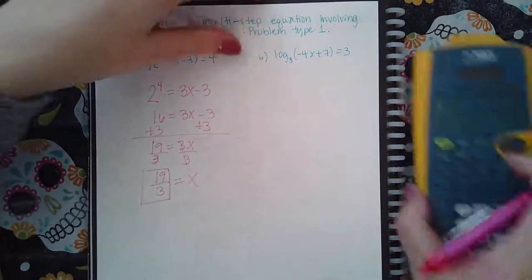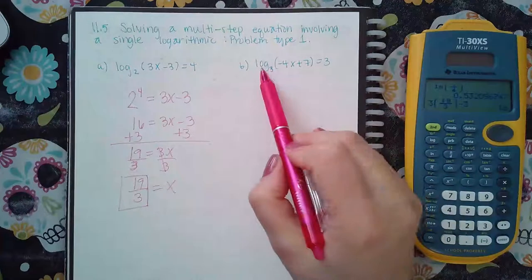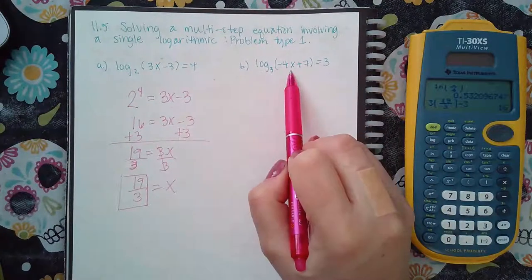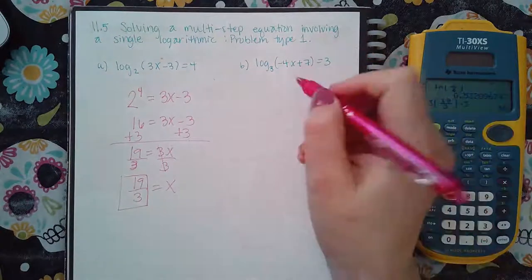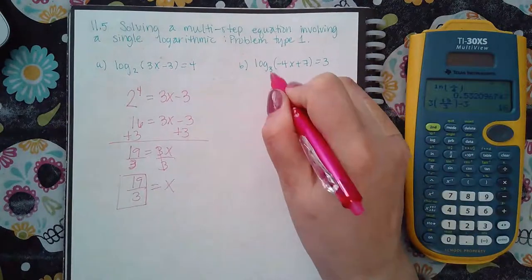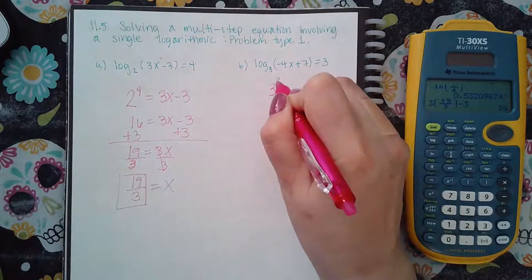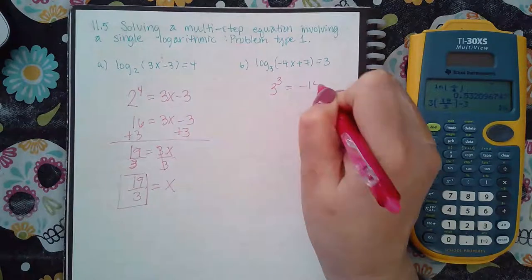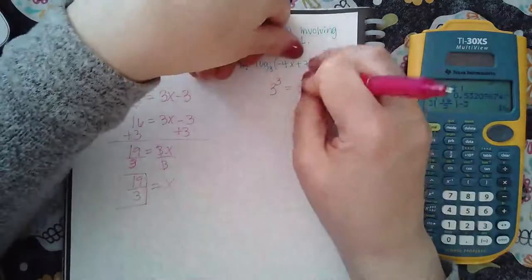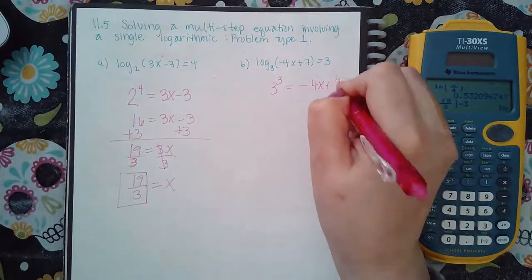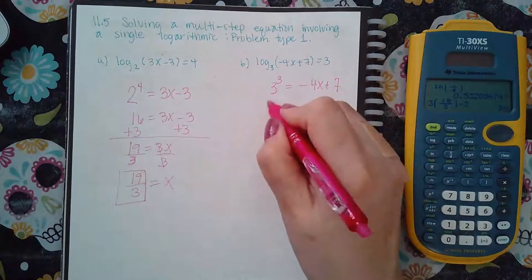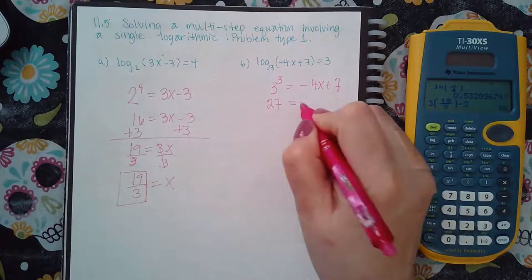Now let's look at this one. Again, I can't do ln of the argument over ln of the base because then the argument would still have an x in it. So the only thing I can do is switch the form to an exponential. So this base with that exponent, and then the argument goes to the other side.